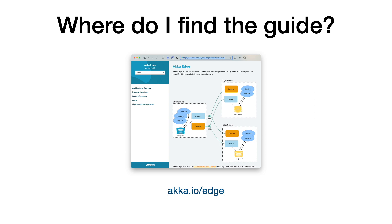What we didn't cover in this webinar — but which is also in the docs — is an example showing how you can do a lightweight deployment and scale to zero for edge services using native Graal images. In the sample projects you can find the full source code in Java and Scala, as well as example Kubernetes YAML files to deploy this to a Kubernetes cluster. Thanks for listening to this webinar.